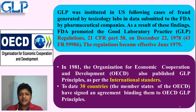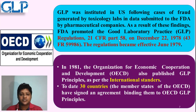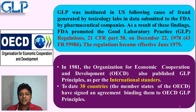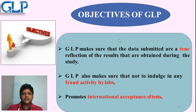In 1979, GLP came into act only in the US. In 1981, a new organization for GLP was started called the Organization for Economic Cooperation and Development, or OECD in short, which also published GLP principles as per international standards. Due to these international standards, many countries started accepting it, and approximately 30 countries became members of OECD and signed the agreement to accept the OECD principles, making it an international standard accepted by all member countries.